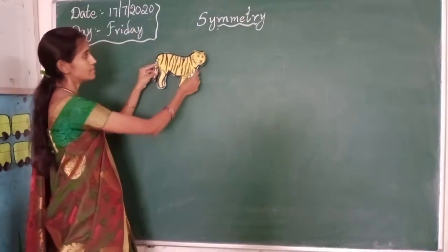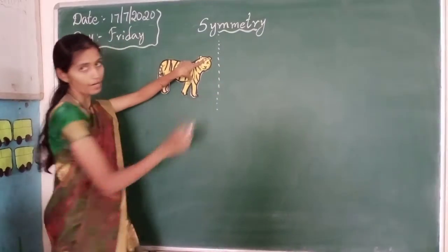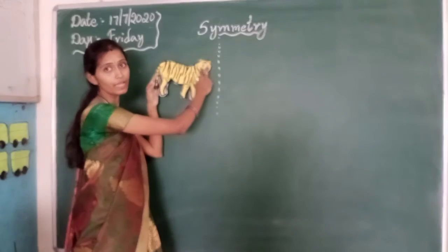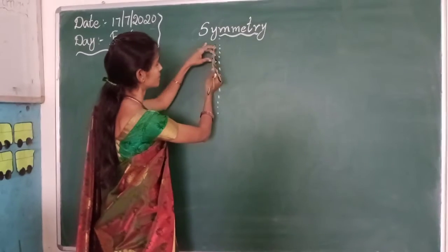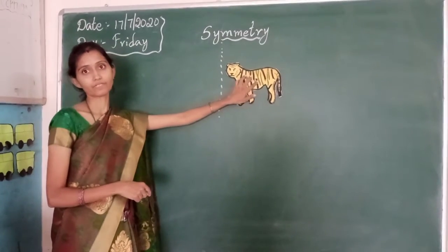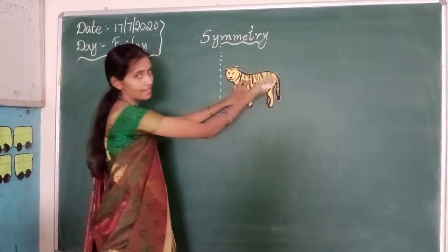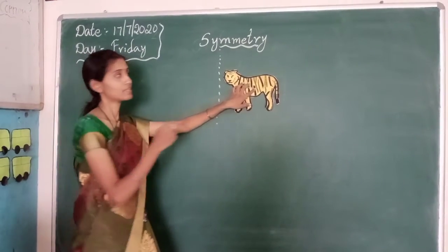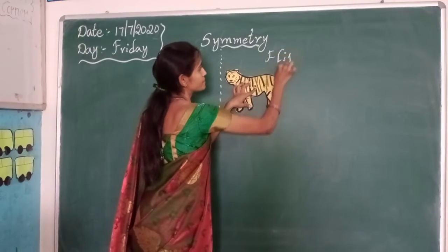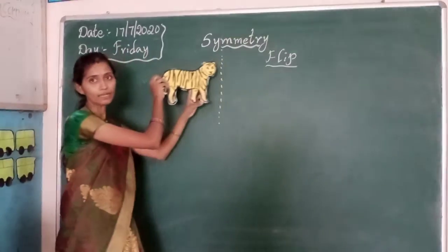For example, see here children — this is my line. Now if I flip a tiger to the other side of the line, what do you observe? The left side becomes the right side and the right side becomes the left side. This is nothing but flipping — we are flipping a picture.